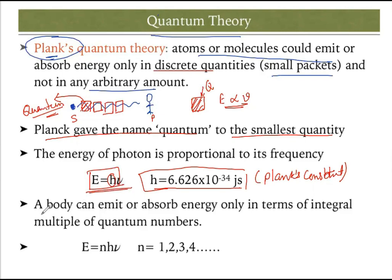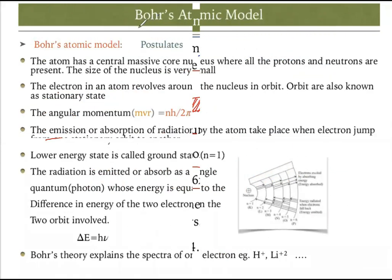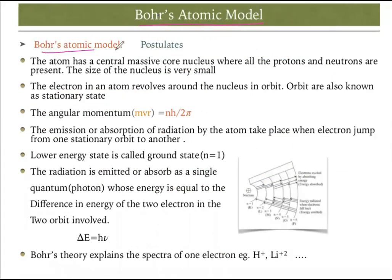A body can emit or absorb energy only in terms of integral multiples of the quantum. The value of n is 1, 2, 3, 4, 5 and so on — there won't be any half, fraction, or negative values. The energies transmitted are in the form of 1, 2, 3, 4, 5 quanta, giving one, two, or three photons of energy accordingly.